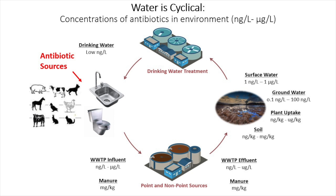You probably noticed I talked about water a lot in that diagram. When you're talking about antibiotics in the environment and how they're possibly impacting human populations, animal populations, or just cycling through the environment, the focus is on water because it is cyclical. I wanted to start with this diagram to show you how that cycle might occur.